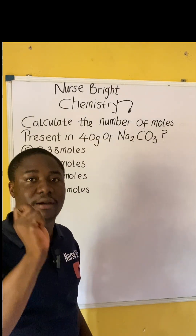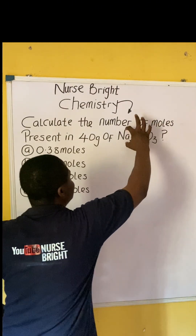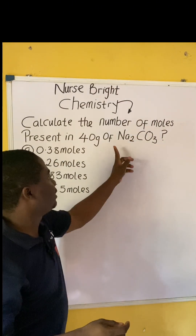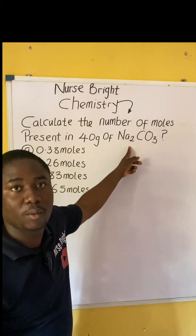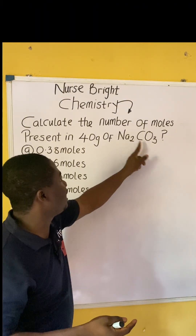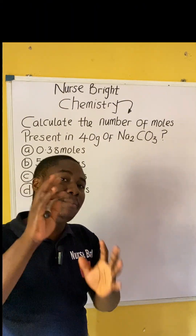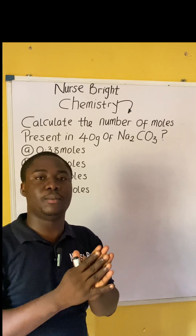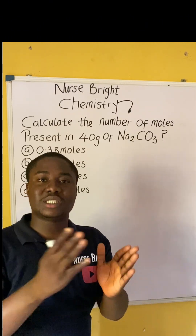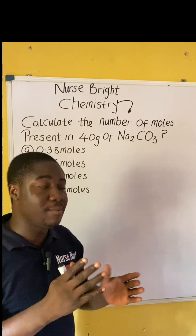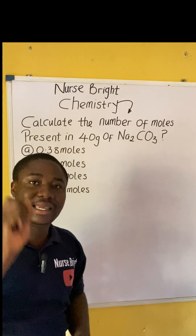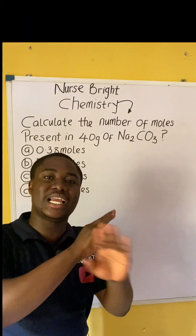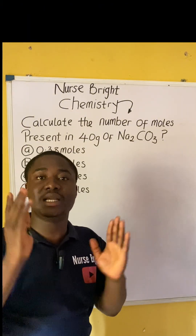G here means grams of this compound. A compound is made up of different elements, and these elements are combined together chemically. So how do we solve this question? It is extremely very easy.